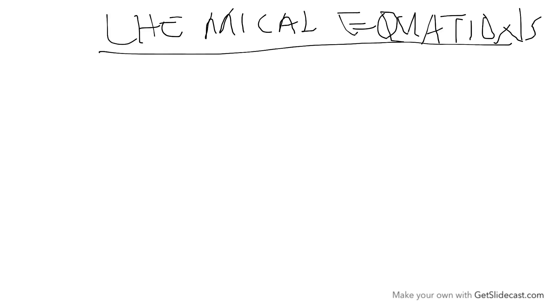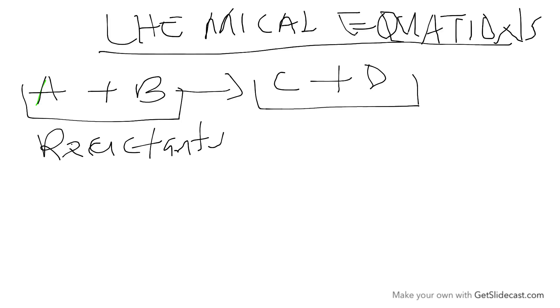Now, a chemical equation is a chemical statement showing reactants and products reacting in a chemical reaction. For example, if we have reactant A, reactant B, forming product C and product D. These are what we call reactants, and these are what we call products.